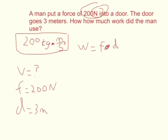Plug that in, W equals 200N times 3M. We can calculate that pretty easy. 200 times 3 is 600. So that's going to be W.